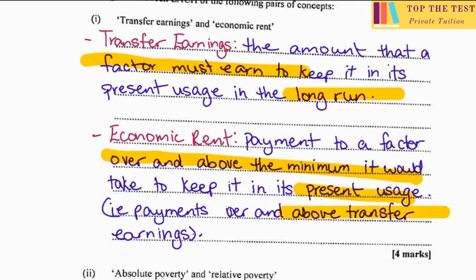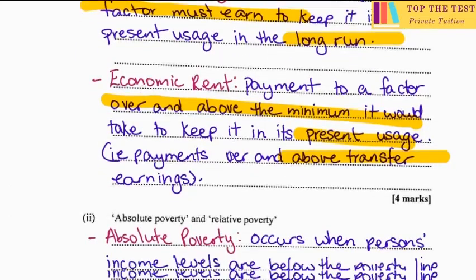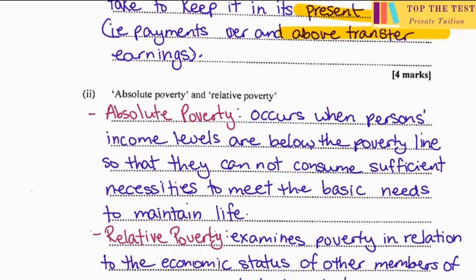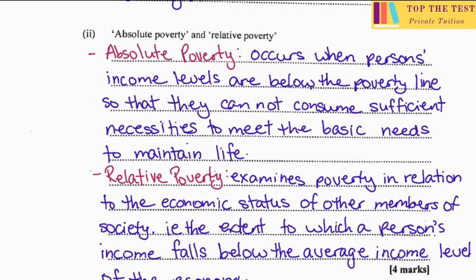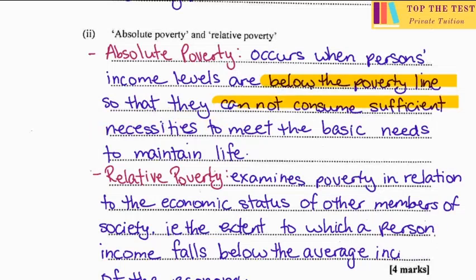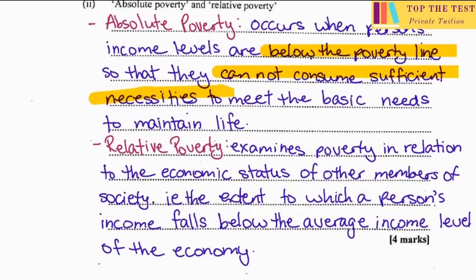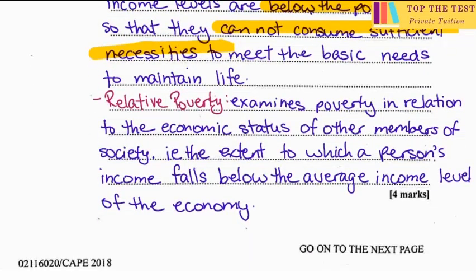Once you have two points each for transfer earnings and economic rent, you get your four marks. Absolute poverty occurs when a person's income levels are below the poverty line, so that they cannot consume sufficient necessities to meet their basic needs to maintain life. The key point is being below the poverty line.